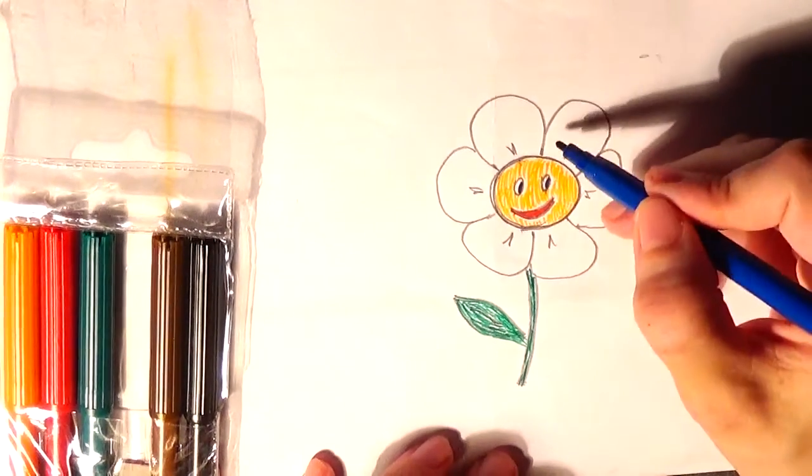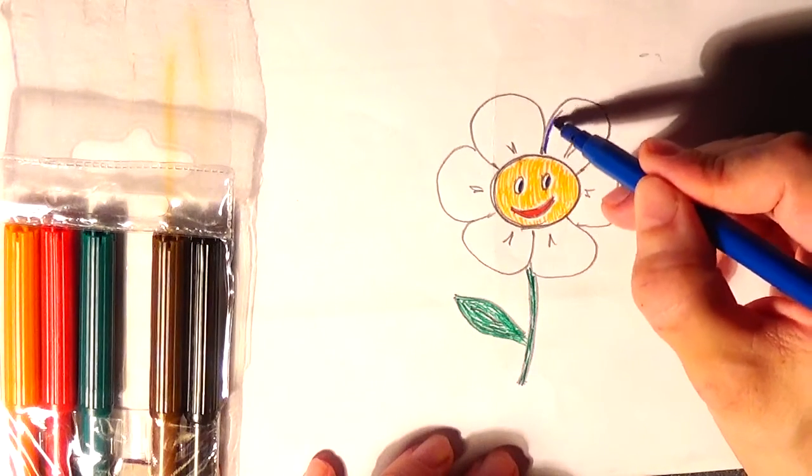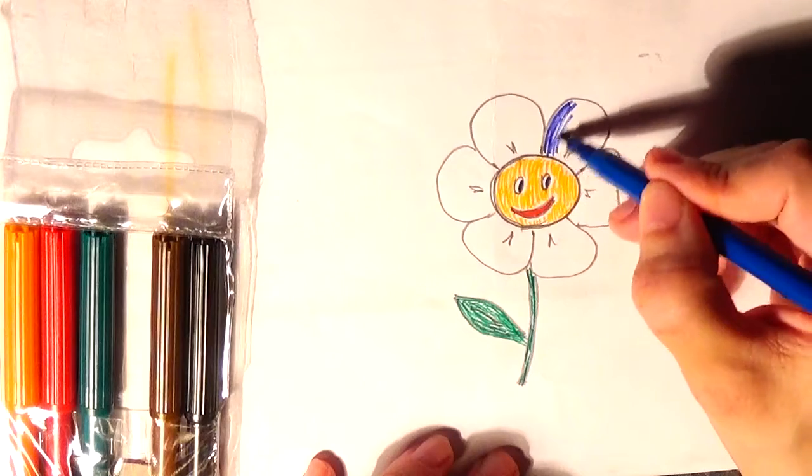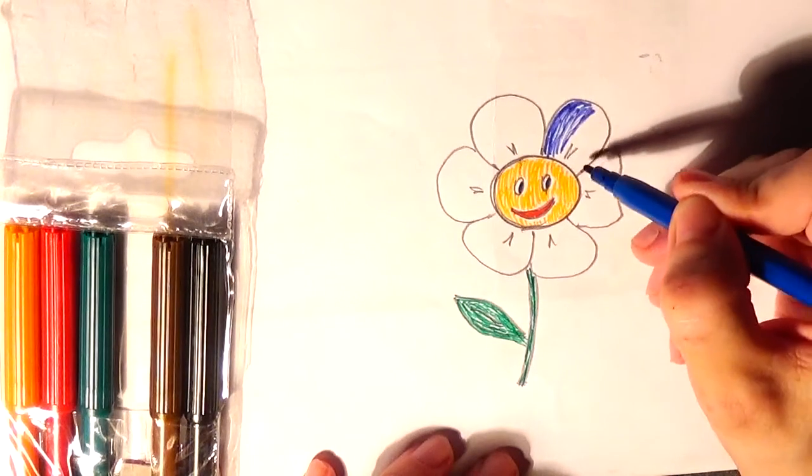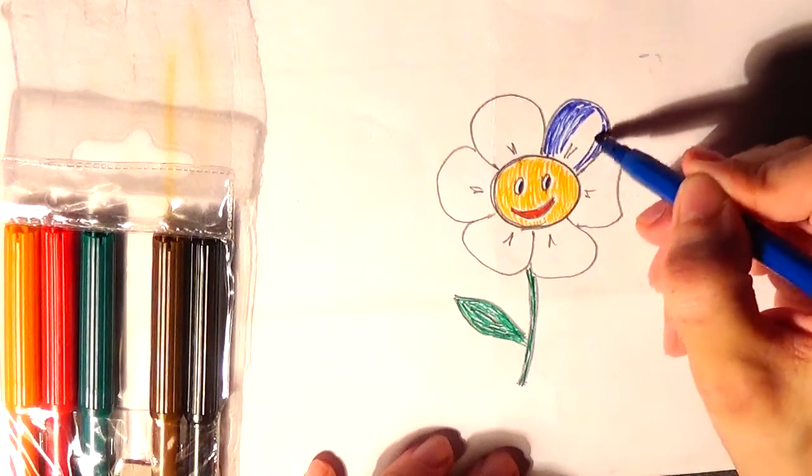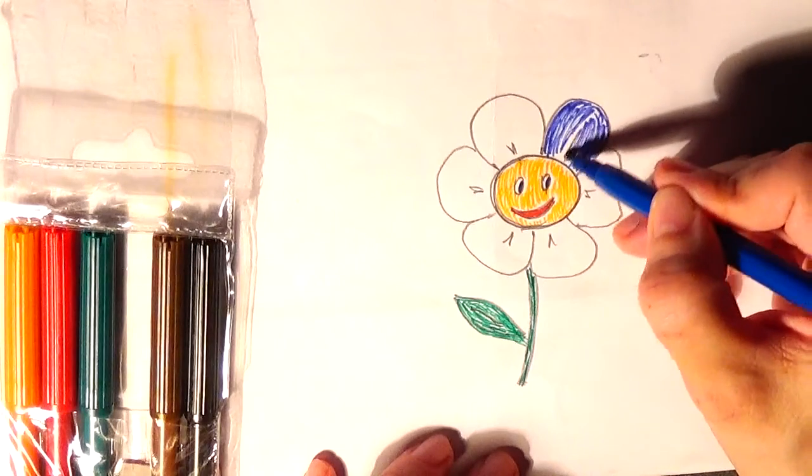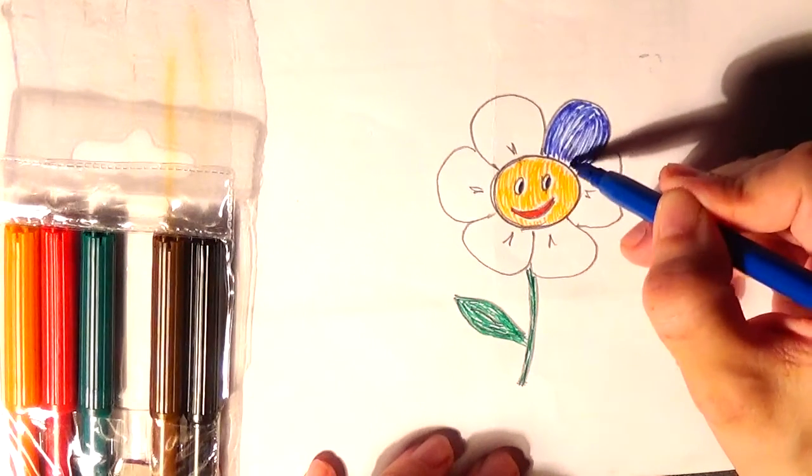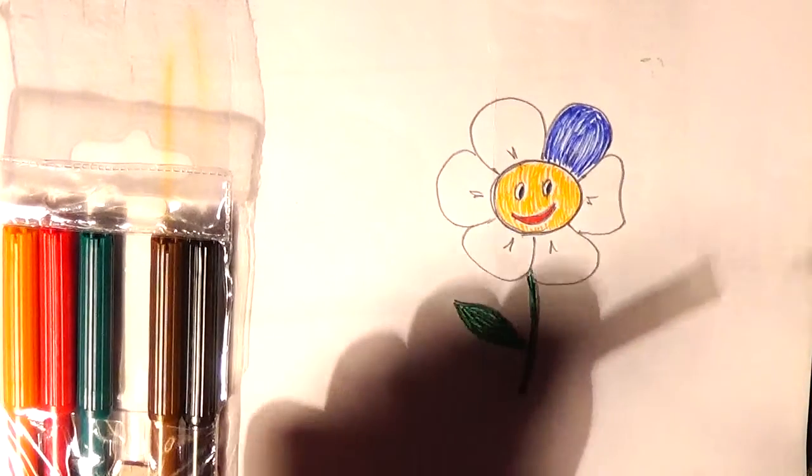And now let's use those colors for this part of the leaves. This is one of the leaves.